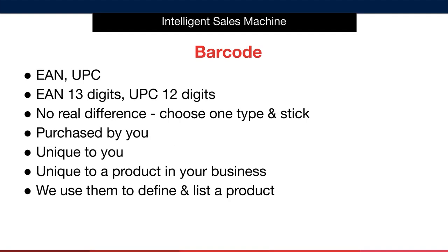Next up is barcodes, commonly referred to as EANs or UPCs. An EAN is not the same as a UPC, although they are both barcodes and both are suitable for use on Amazon. EAN barcodes have 13 digits and UPCs have 12, and it is very likely when buying barcodes that you'll be given both types upon purchase. There is no real difference to you — simply pick one type and stick with it throughout your journey. Neither is better nor worse; the reason they both exist is that traditionally EANs were used in Europe while UPCs were used more in North America.